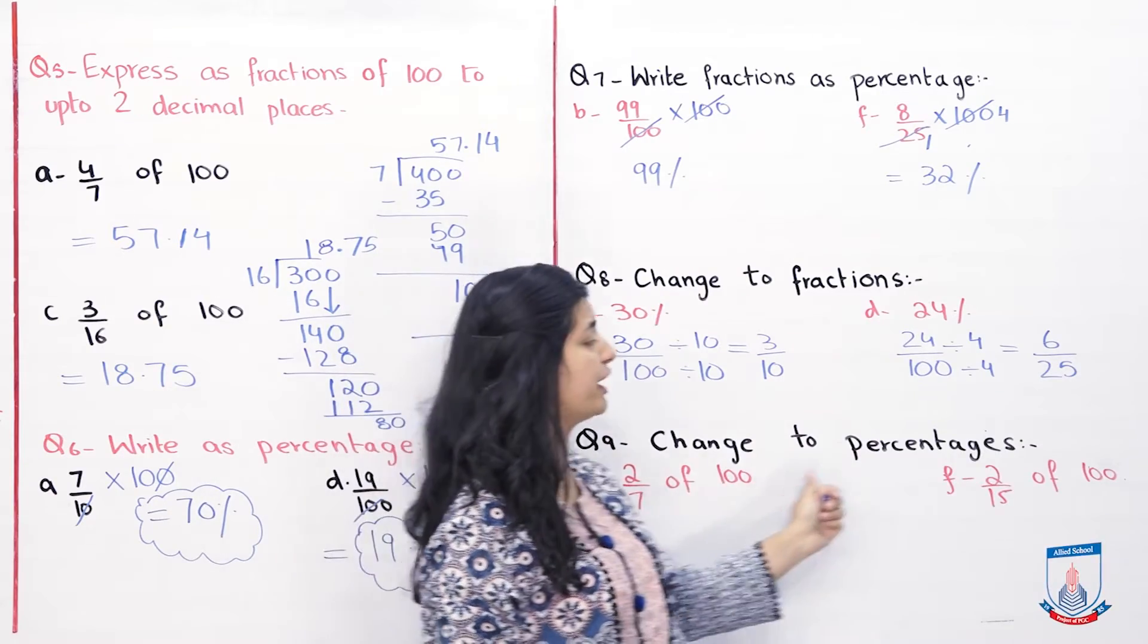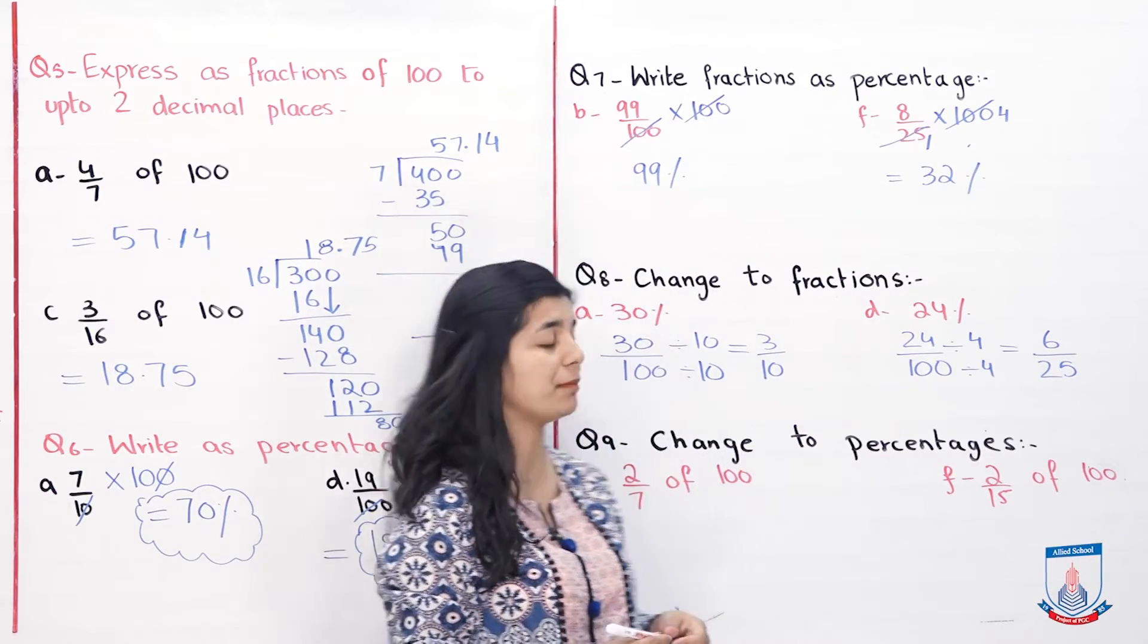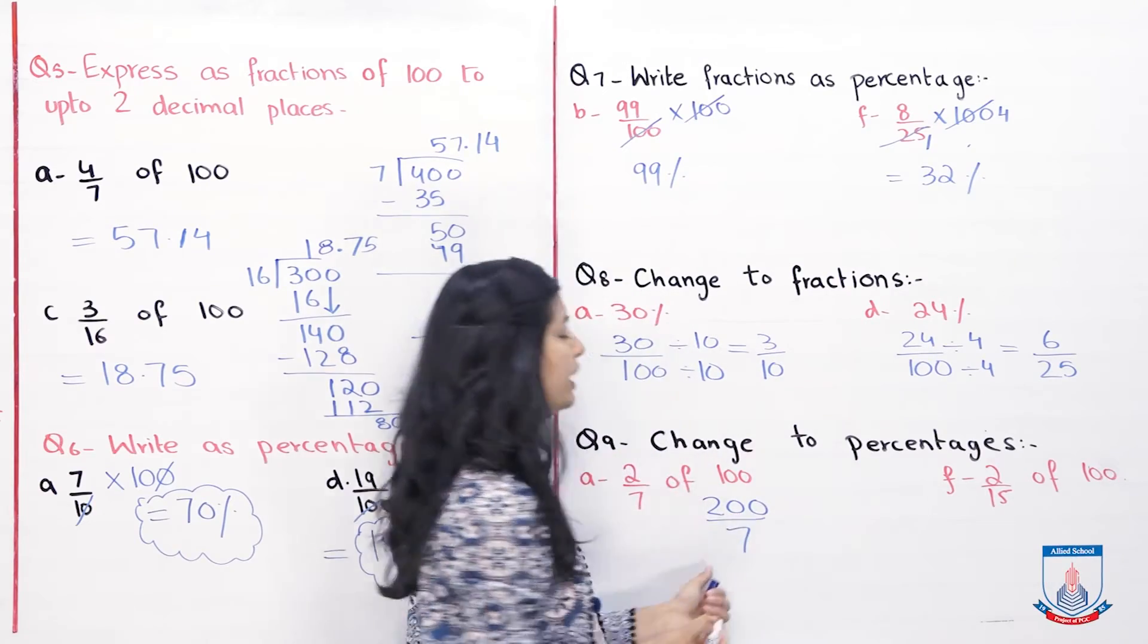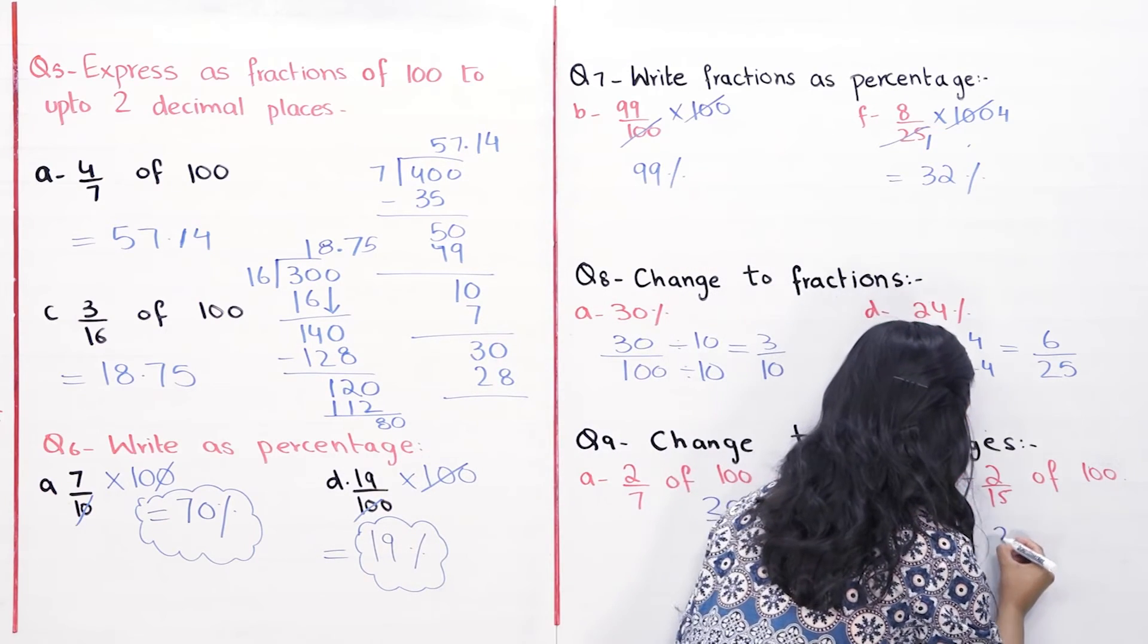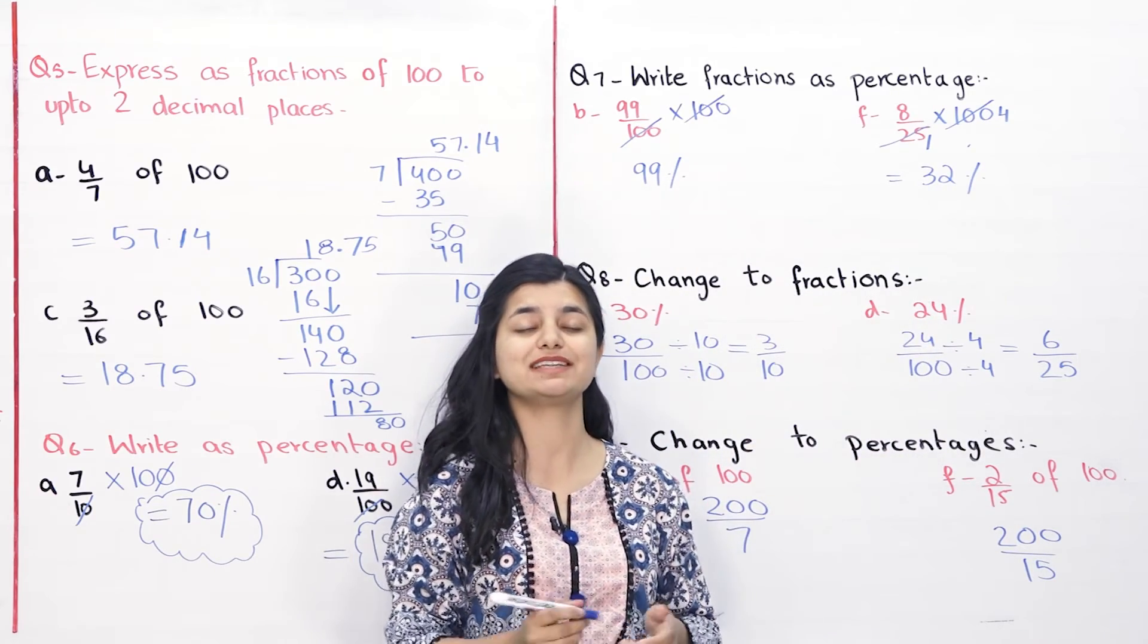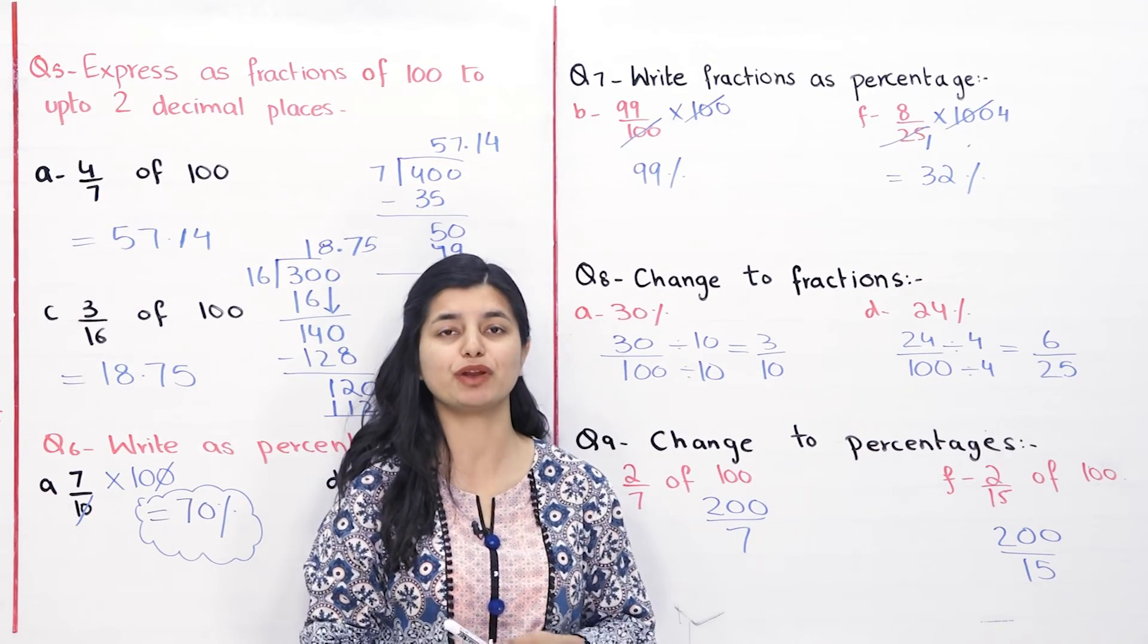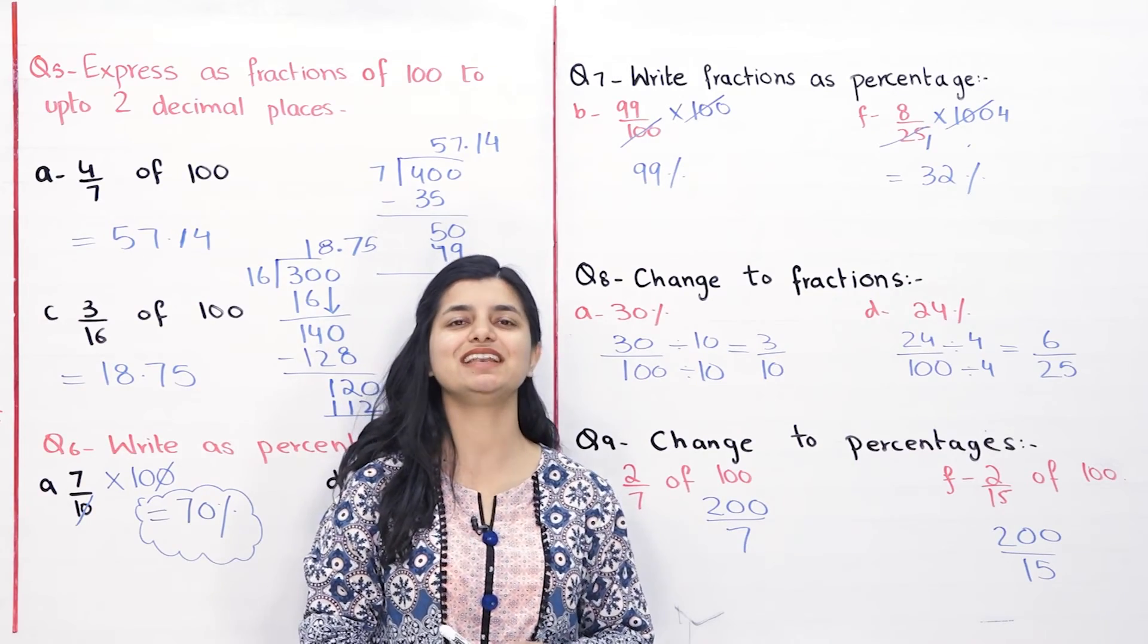Ab hum dekhenge question number 9 ko change to percentages. Bilkul waisa hi jaise hamne question number 5 me solve kiya tha. Same methodology aapne use karna hai. 2 over 7 of 100 hai, so you are going to multiply 2 by 100. 200 over 7. Aur in ko aapne pher divide karle na hai long division method ke saath. Similarly 2 into 100 over 15, 200 over 15. And in ko aap divide karlo ge and you will get your answer. Iski reference ke liye aap question number 5 jo hamne abhi abhi solve kiya hai usko dek sakte hai. And with that students I will now take my leave from this lecture. Aagliye lecture mein humne baaki ke kuch questions jo rahe gaye hain exercise 4 se ke unko complete karna hai. So I will be looking forward to seeing you in that lecture. Until then take care and Allah hafiz.